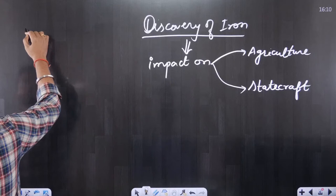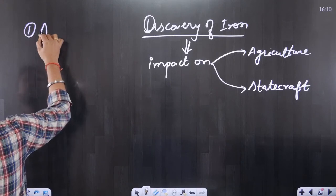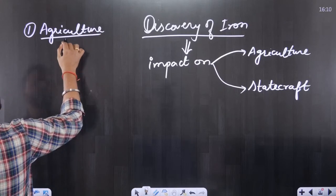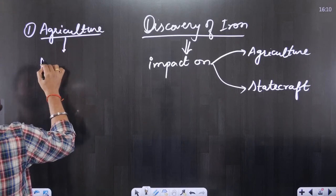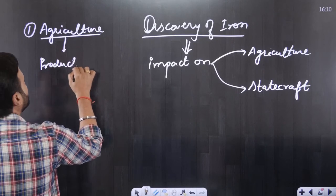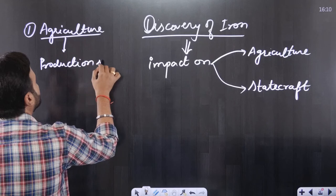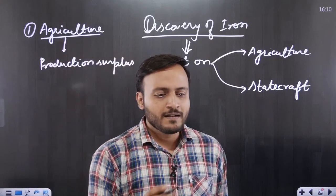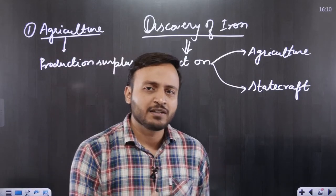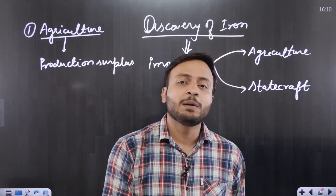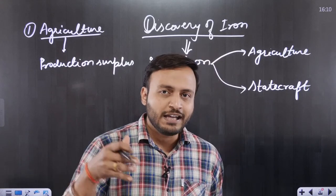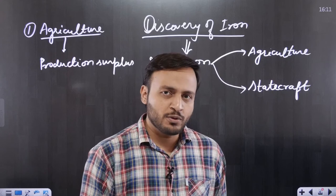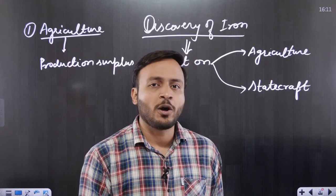The use of iron led to production surplus in agriculture. Agriculture had a beneficial impact because deeper tilling and plowing of the land provided better production of food grains. Not just that — the use of iron made better protection of crops possible, and easier cutting down of trees with iron axes. So we have agricultural tools defining agriculture, and weapons defining the statecraft.